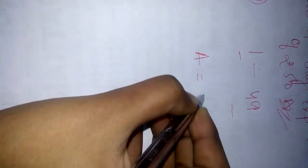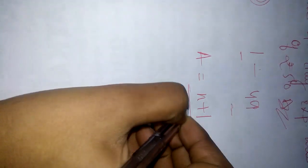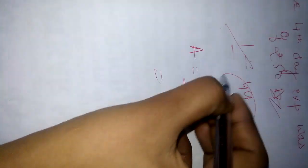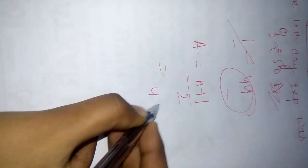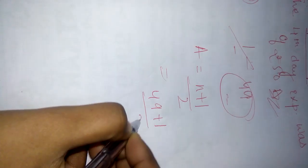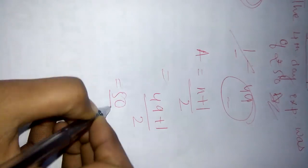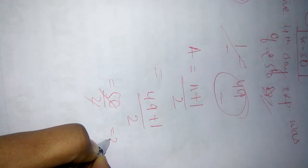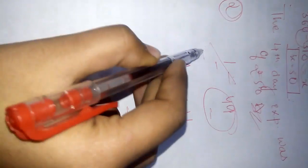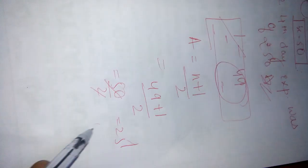Applying this formula. Average is equals to n plus 1 upon 2. 49 plus 1 upon 2 is equals to 50 upon 2. That is 25. So the average of this will be 25.